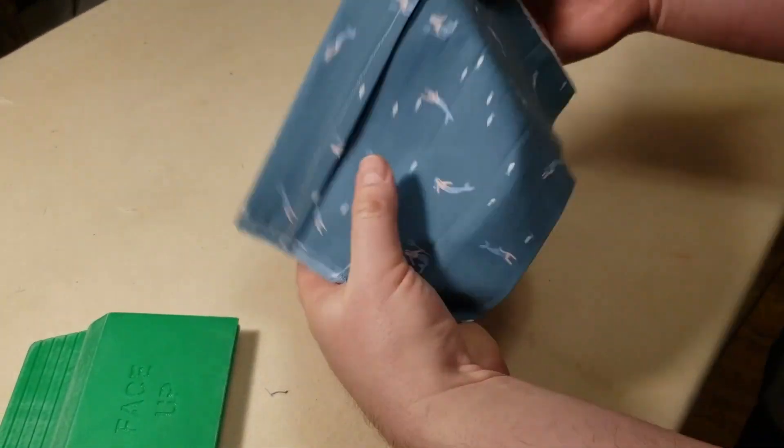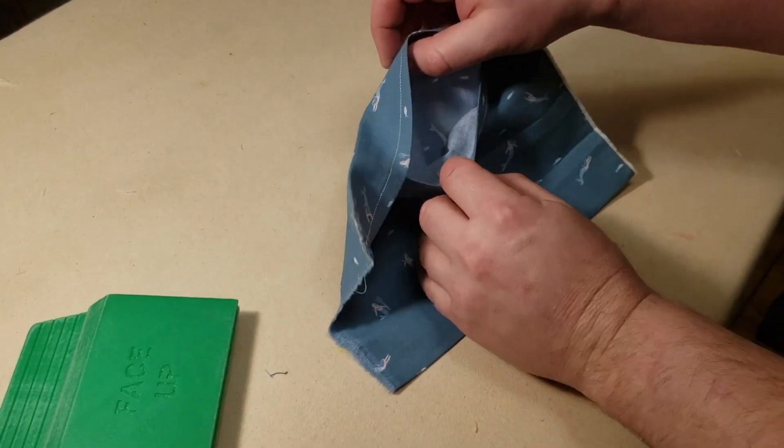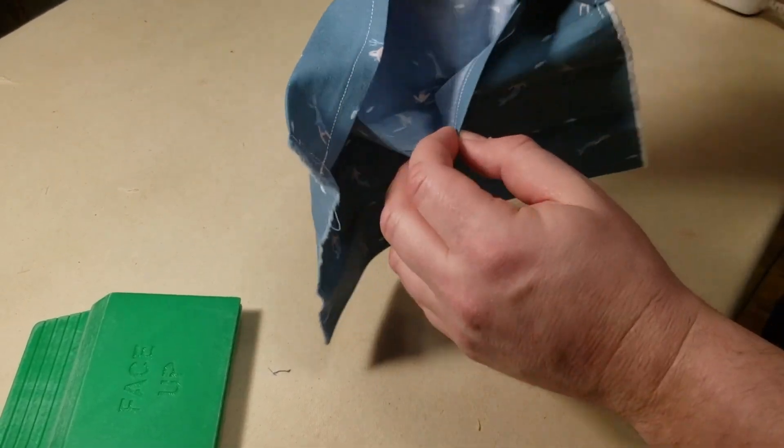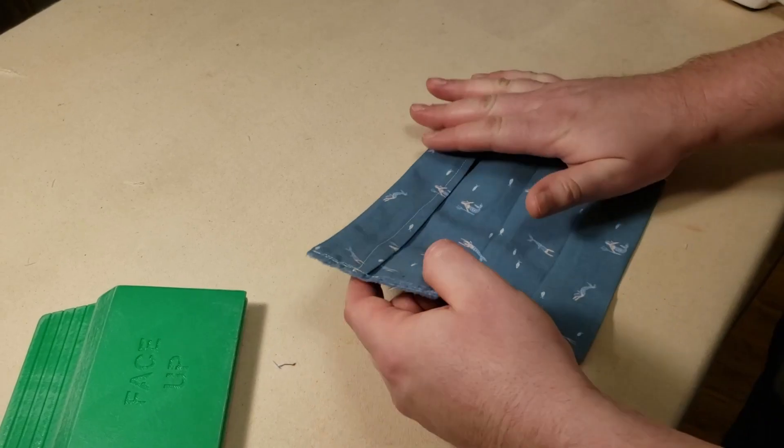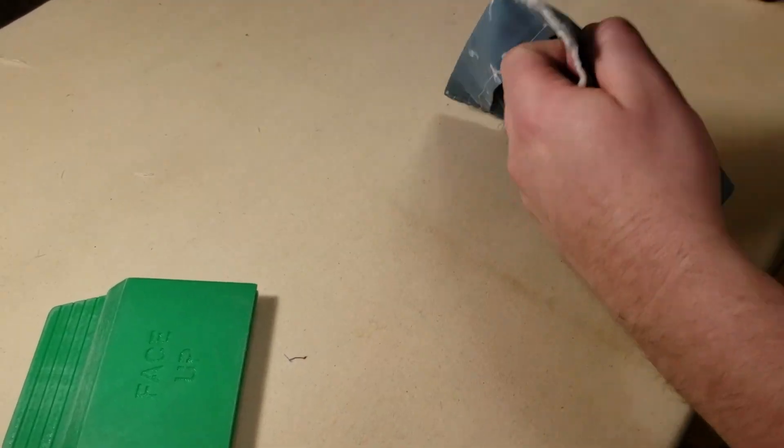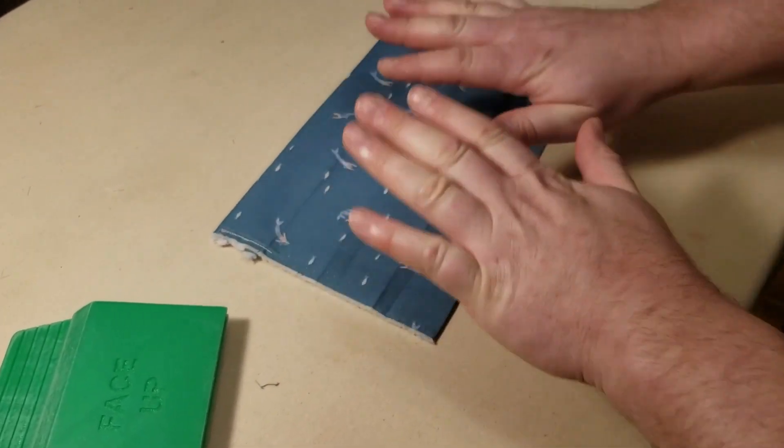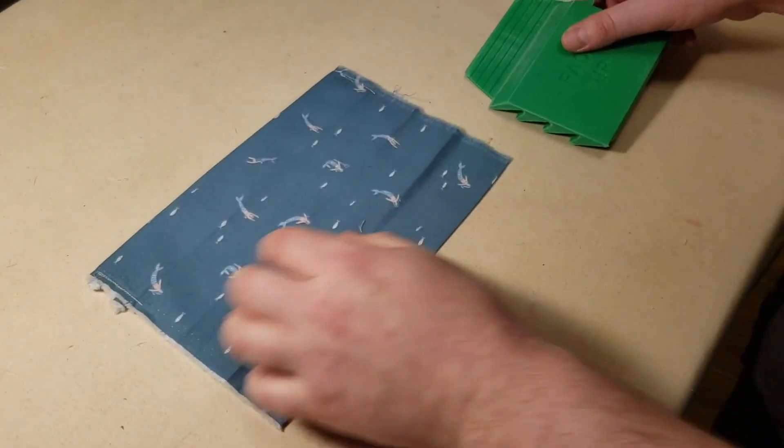Today we're going to be making a pocket mask, which is actually a mask that lets you put material in it if you want to. This is a popular design and we'll post a link on the video to show you where you can get that pattern. But today I'm going to show you how to do this.